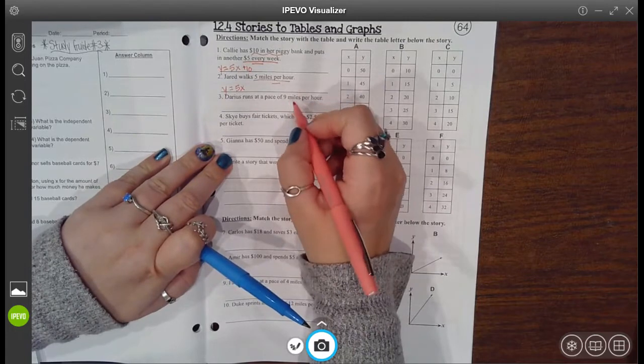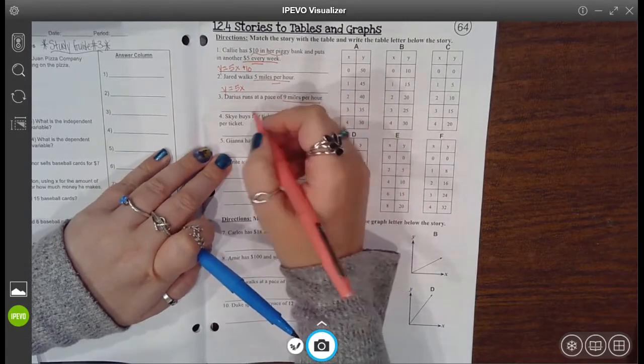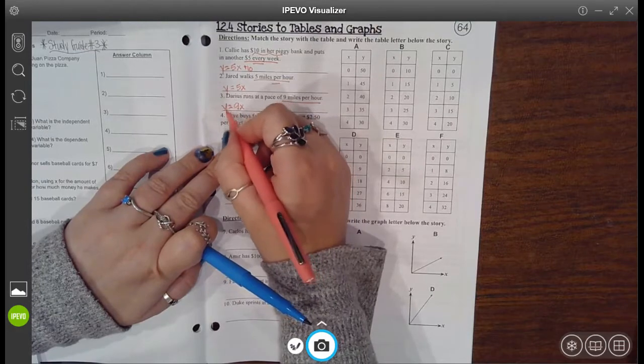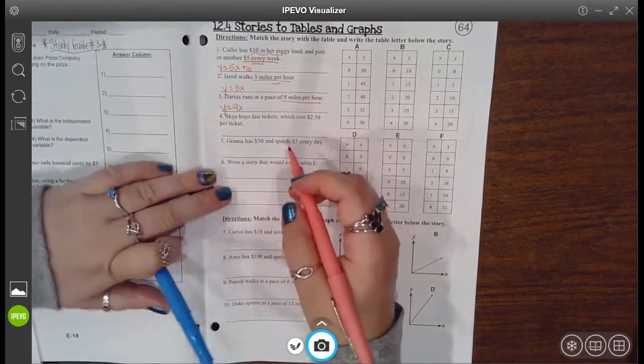Darius runs at a pace of nine miles per hour. So nine is my rate which is multiplied by my x and that's equal to my y.